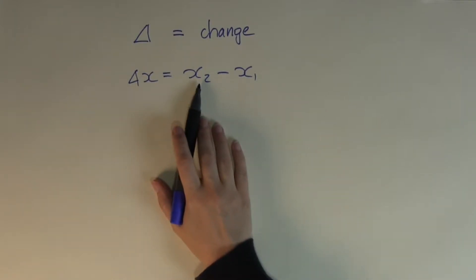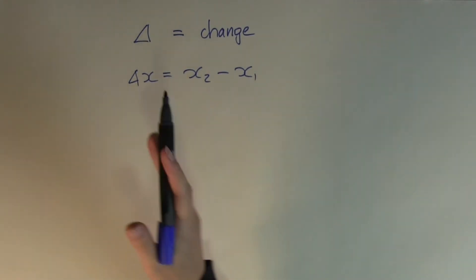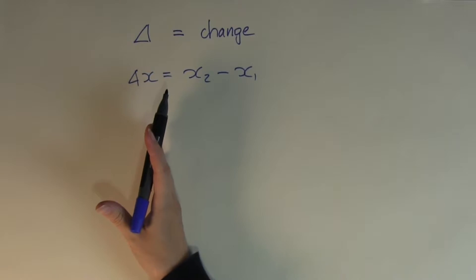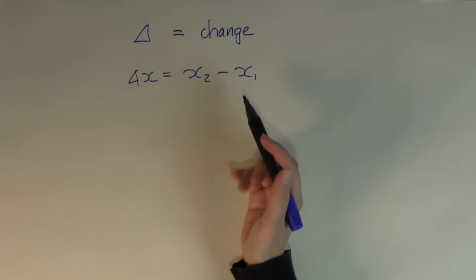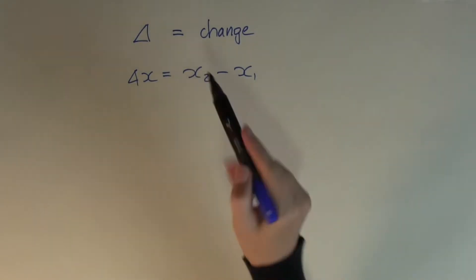In mathematics, when we talk about numbers 1, 2, 3, 1 is usually the initial price or the starting price, 2 would be the final price. So the change in any quantity is always the final minus the initial.